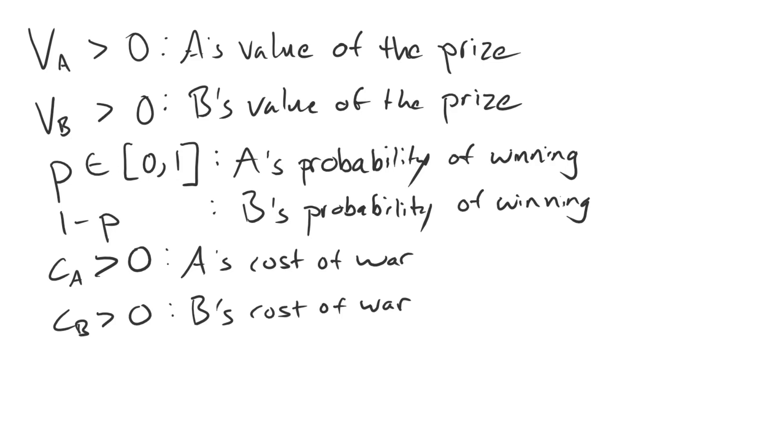The last piece of notation is going to be a hypothetical division that we might want to impose between these two states. We're going to call that division X, where X represents A's share of the settlement. It's a hypothetical settlement. We're going to make X some value between 0 and 1, so X is representing the share in terms of a percentage that A is receiving, with B getting the remainder. So 1 minus X captures B's share of that hypothetical settlement.